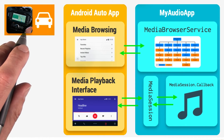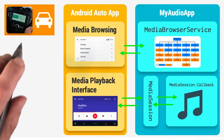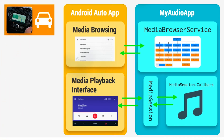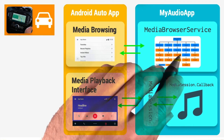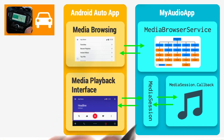The vehicle display itself doesn't do much except draw the pixels from the Android Auto companion, play sound, and capture voice input. Inside your app, you implement a media browser service. This service maintains a tree structure of all of your media, such as a collection of music. This could be either streamed or stored locally.